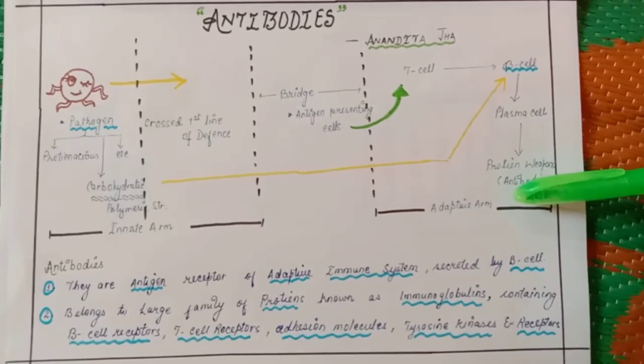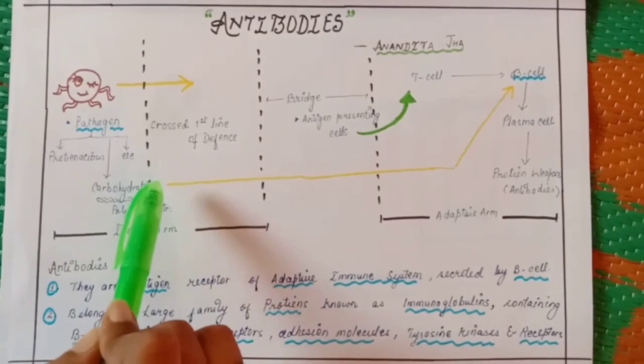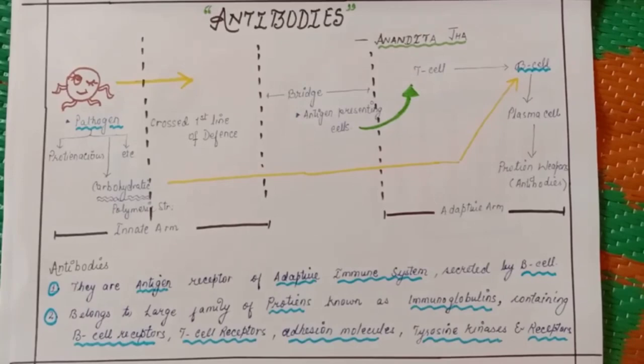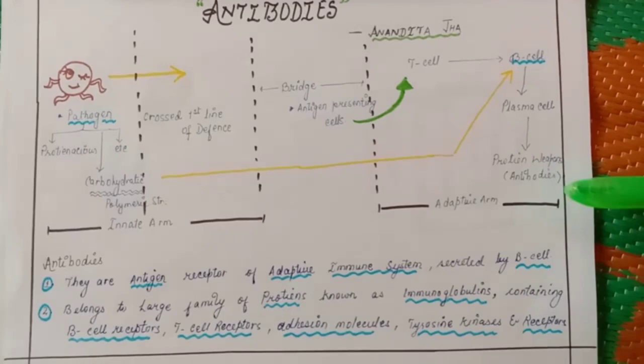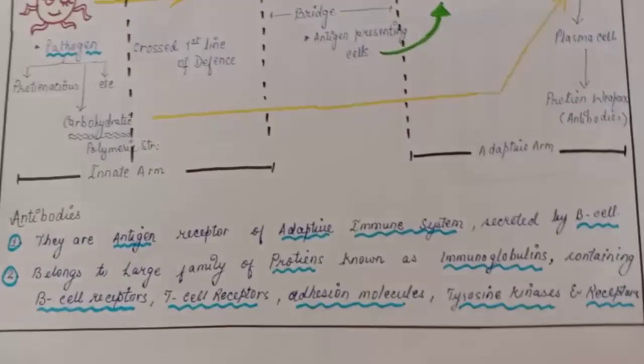There are other mechanisms also. If it is carbohydrate, a polymeric structure, they can directly activate B cell as B cell is also a kind of antigen presenting cell. From innate arm to adaptive arm, we have proteinaceous weapons as we have classified in the very first video. Make sure you watch that to get the overview of immunology. These proteinaceous weapons are antibodies, nothing but the proteinaceous weapons.